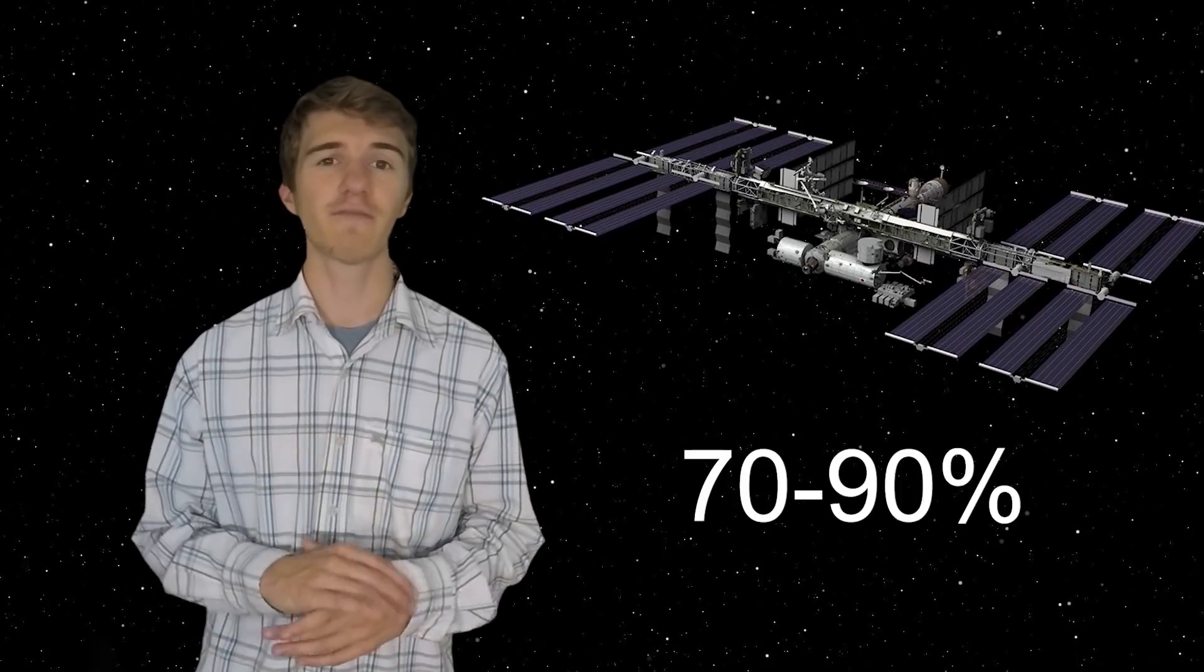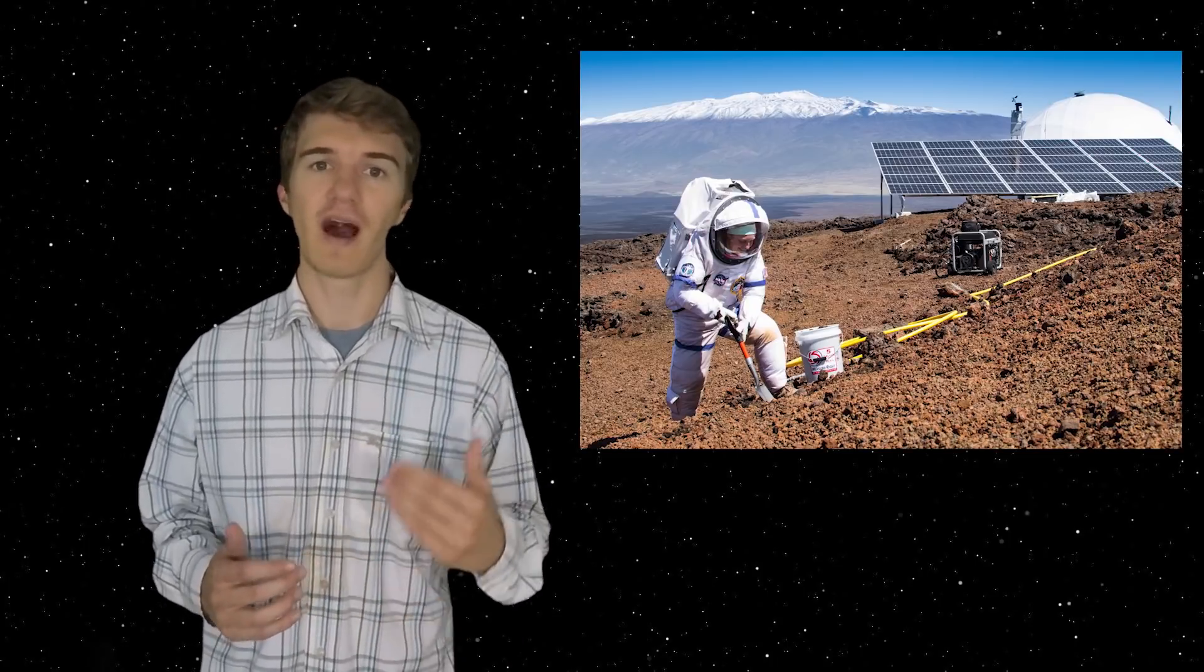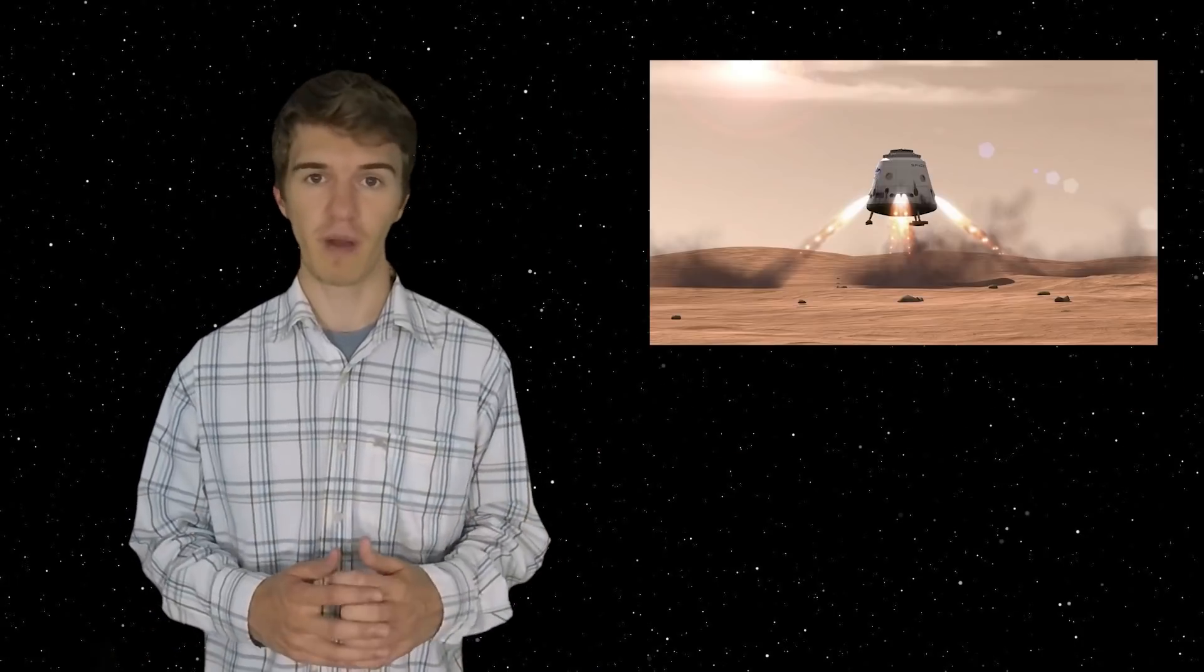Therefore, a lot of the water that we need to survive is actually just going to be recycled. For example, on the International Space Station, 70 to 90% of the water that they use is recycled. And recycling water on Mars is actually more energy efficient than collecting ice from underneath the ground. Therefore, if we're able to raise that percentage and recycle even higher and higher amounts of water, then we get to a point where all of the ice that we'd be mining would directly be going to propellant production.